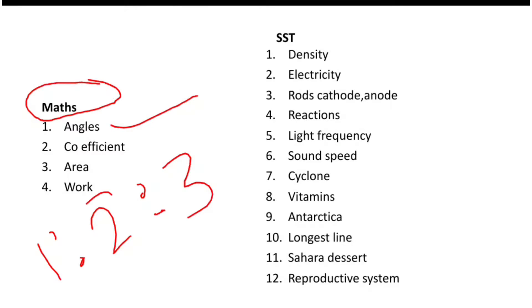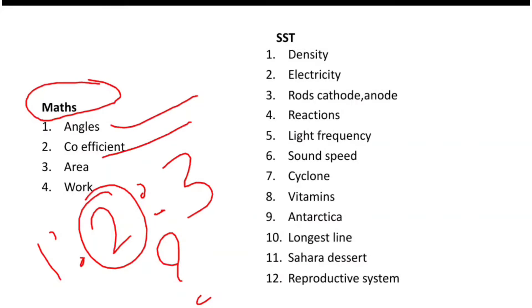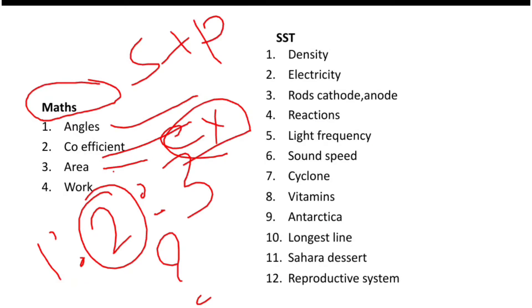We are going to talk about A-Topics — First and Third. Next is Area. Area is a rectangle and a square.